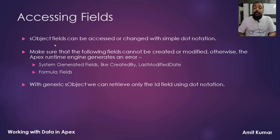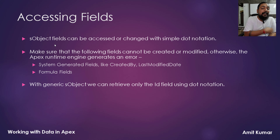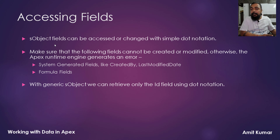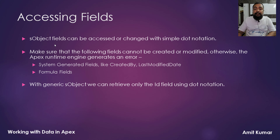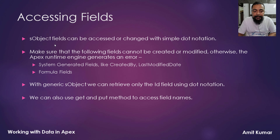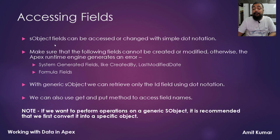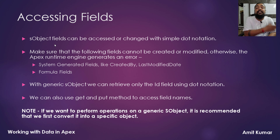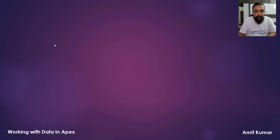For a generic SObject, we can retrieve only the ID field using dot notation. If you are working with a generic SObject, dot notation can only be used with the ID field. To access or modify any other field, we must use the get method or put method. It is recommended that if you want to perform operations on a generic SObject, first convert it to a specific Salesforce object and then perform that operation.